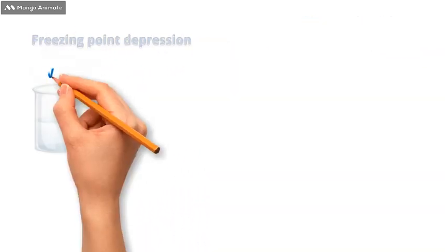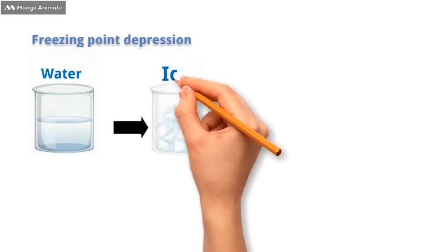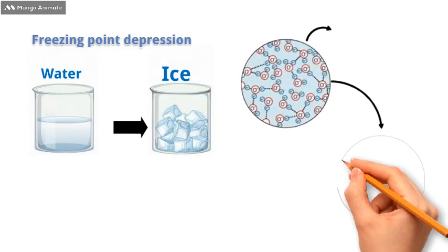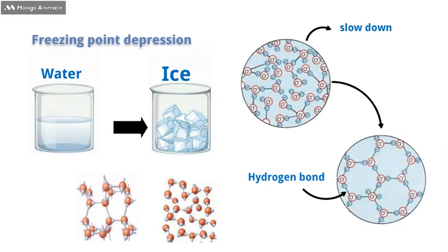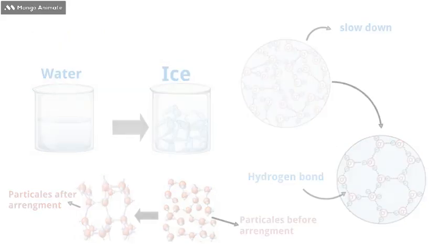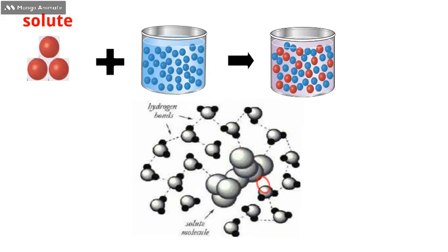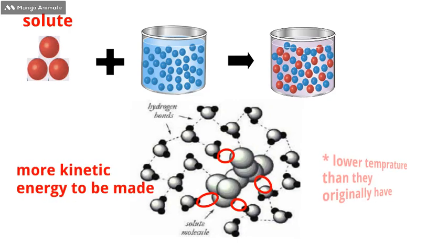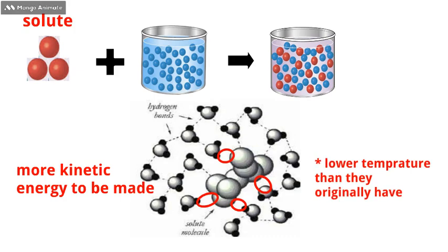Freezing point depression. Water converts into ice when water molecules slow down and hydrogen bonds form, and molecules are arranged in a way that forms ice. But if you add solute particles into water, forming hydrogen bonds becomes harder, and in turn, they need more kinetic energy to be made and form ice at a lower temperature than they originally have.